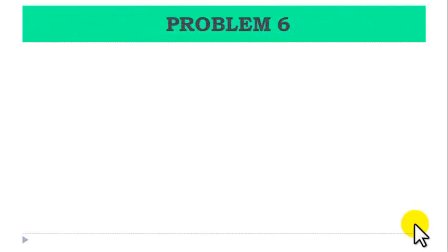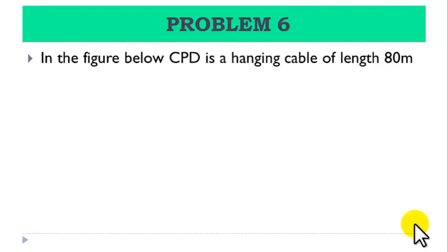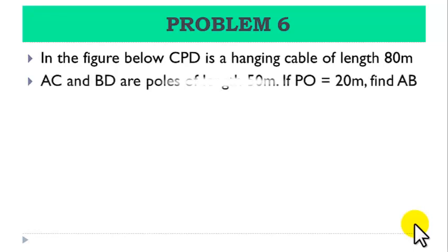The problem. In the figure below, CPD is a hanging cable of length 80 meters. AC and BD are poles of length 50 meters. If PO is equal to 20 meters, find the distance between the poles AB.